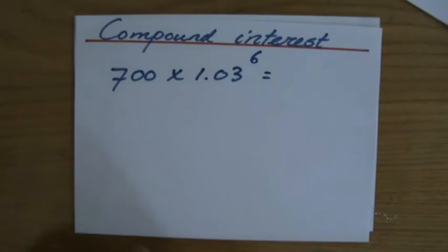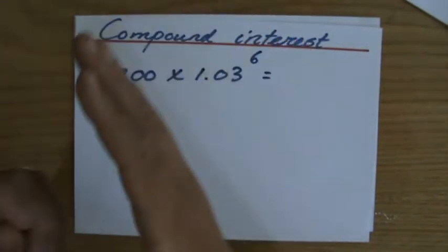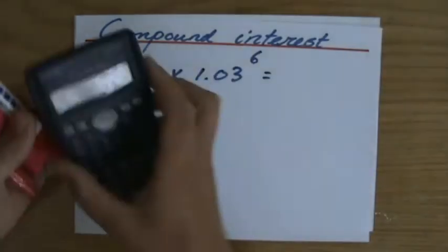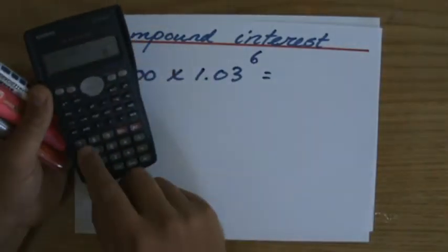So I have to do it times 1.03, times 1.03, times 1.03, so that's six times, because I'm leaving it there for six years. I'm going to use my calculator for that.